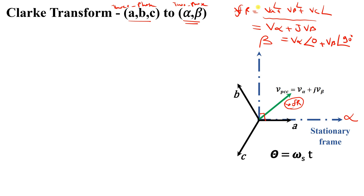So we convert from three vectors into two vectors: alpha at angle zero and beta at angle 90 degrees. To do this, you project A, B, and C onto the beta and alpha axes. Extend the lines accordingly.